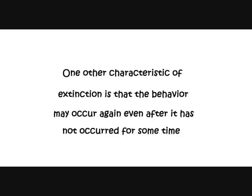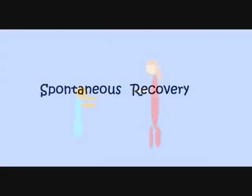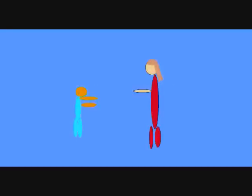One other characteristic of extinction is that the behavior may occur again even after it has not occurred for some time. This is what we call spontaneous recovery. Although Sam may have stopped his cookie asking, he would ask once in a while just to see if his mom would give him one.